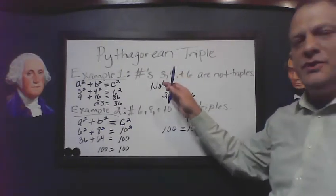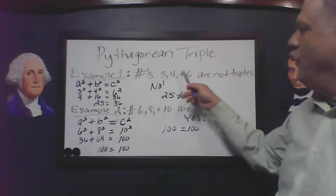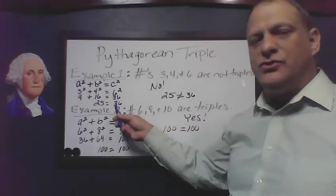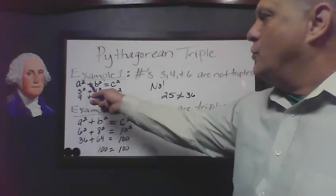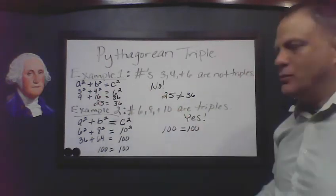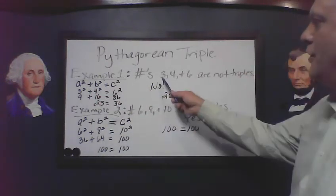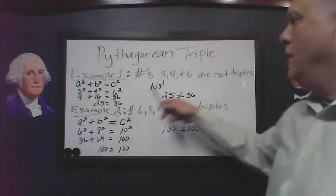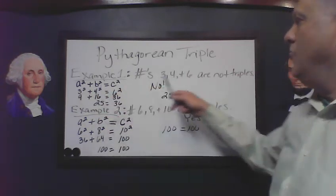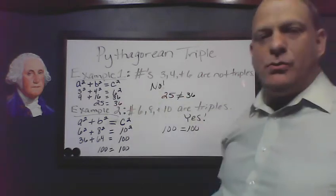What we're going to do is plug in the numbers 3, 4, and 6 and see if they match. We're going to insert 3 where the A squared is, 4 where the B squared is, and 6 where the C squared is.